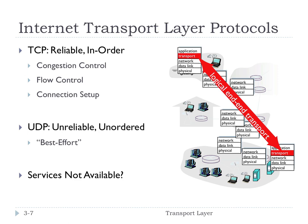The internet transport layer provides two protocols — TCP and UDP. TCP is a reliable, in-order service providing congestion control and flow control, and requires connection setup. Congestion control means TCP will slow itself down if the network appears congested. Flow control means the TCP sender slows down if the receiver can't keep up. TCP ensures segments are received reliably — they don't get lost — and are received in order.